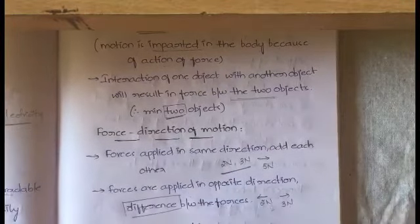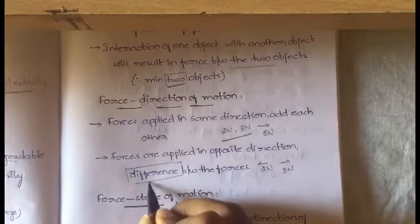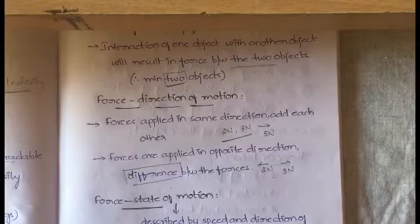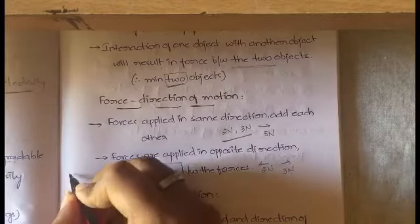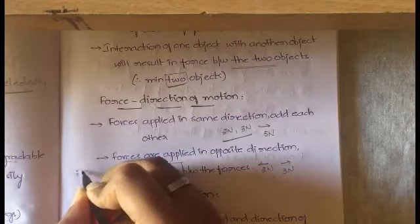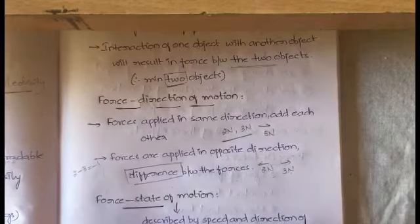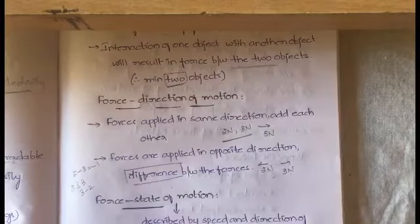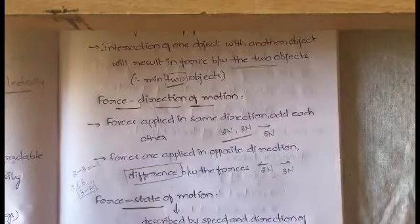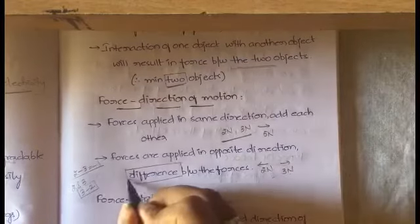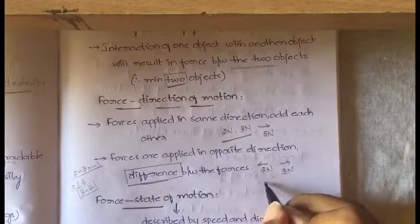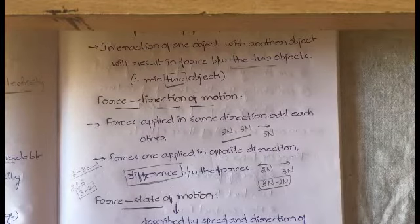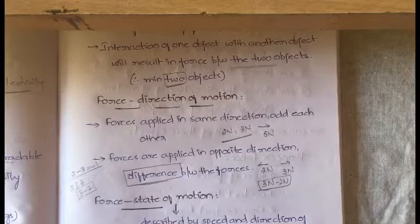In opposite directions, you subtract — taking the difference means larger quantity minus smaller quantity. So three newtons minus two newtons gives one newton. Note: 'difference' means larger minus smaller regardless of order, whereas 'subtraction' follows the given order. So for opposite direction forces, take the difference: three newtons minus two newtons.